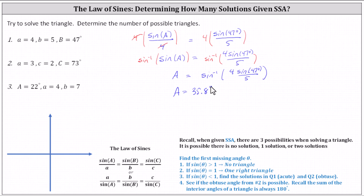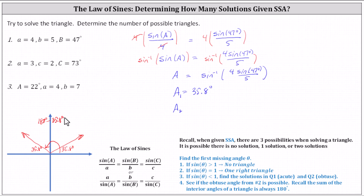So we know there's at least one possible triangle — let's call this A sub one. We now need to determine if there's a second possible obtuse angle for angle A, we'll call it A sub two. Sketching 35.8 degrees in standard position, recall the sine function value is also positive in the second quadrant. The obtuse angle with the same reference angle of 35.8 degrees would be 180 minus 35.8, which is 144.2 degrees.